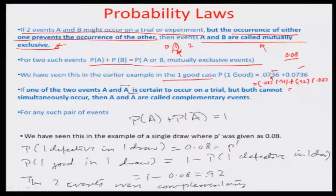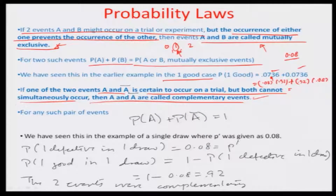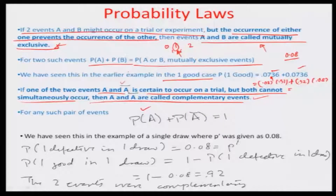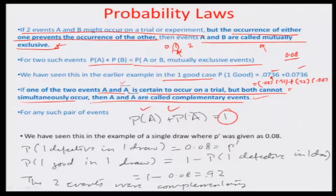Further, if two events A and A-complementary are certain to occur on a trial but cannot simultaneously occur, then A and A-complementary are known as complementary events. The probability of A and the probability of A-dash combined together is most certain — either A should occur or the other events apart from A should occur. So the total probability is 1.